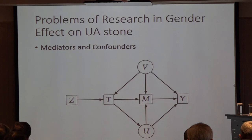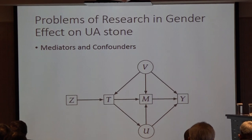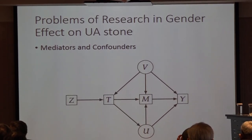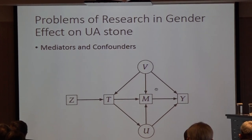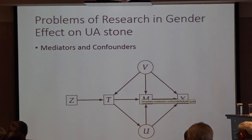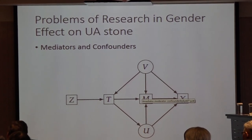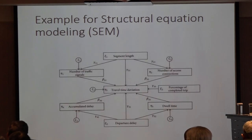We propose the concept of using mediators and confounders in the analysis of uric stone. When using the traditional regression method, we only found one factor M as significant, but the key variables K and G will be masked. Such a complicated problem is obscured by using traditional statistical methods for analysis.